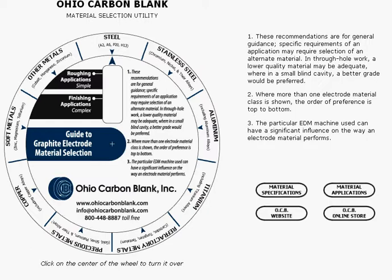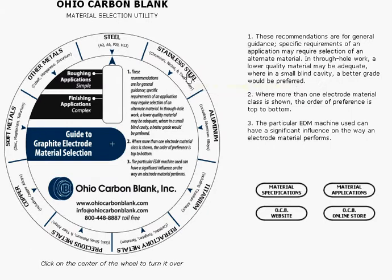Let's say we need to work on some stainless. Just click on the appropriate workpiece material located on the outer edge of the wheel. Here it is. Notice the text that appears when you hover over it.